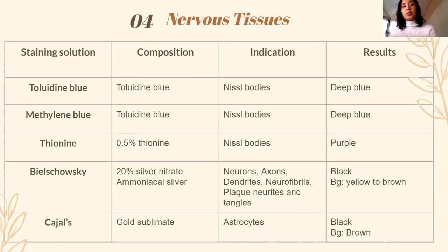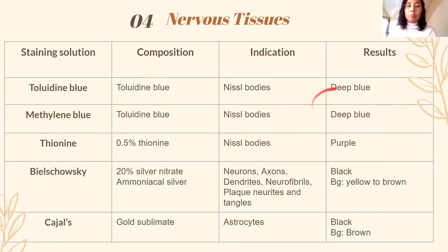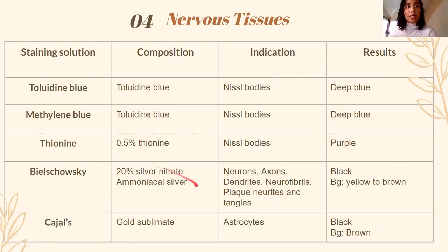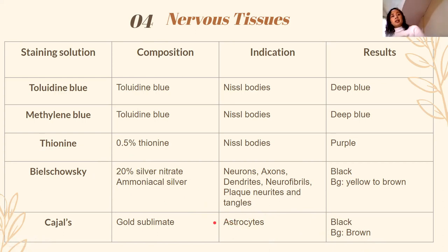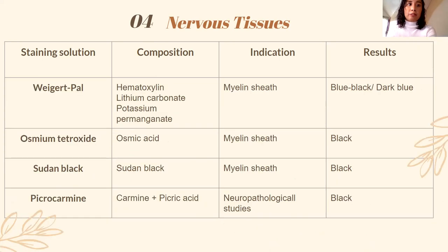Next is nervous tissue. For Nissl bodies — the bodies of neurons — we use toluidine blue, methylene blue, and thionine, producing deep blue to purple. Bielschowsky stain is important: it stains all around — neurons, axons, dendrites, neurofibrils, neurites, and tangles — producing a black color. Bielschowsky contains silver nitrate and ammoniacal silver. Cajal's gold sublimate is a gold impregnation method that produces black on a brown background, specifically for astrocytes — the phagocytes found in the CNS and peripheral nervous system.